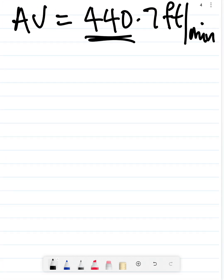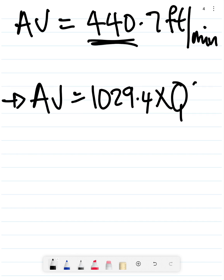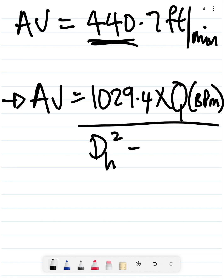Looking at the second equation, equation two says annular velocity is going to be 1029.4 times Q, but this time in barrels per minute, divided by your hole size squared minus the pipe size squared.